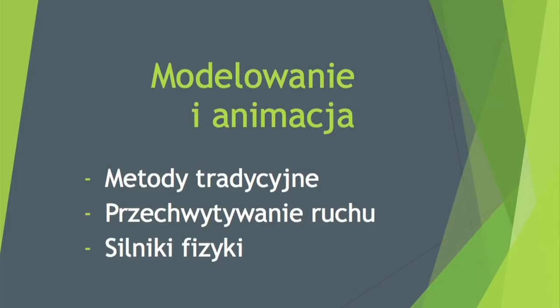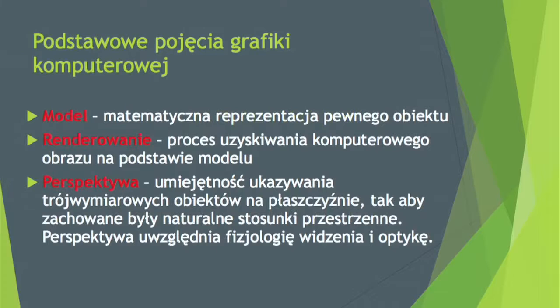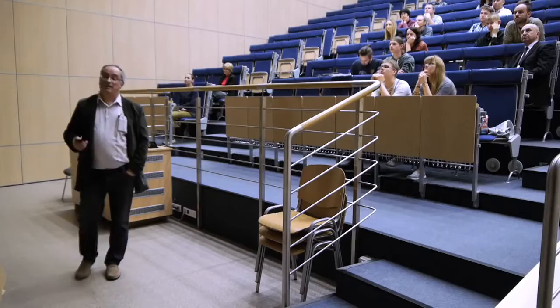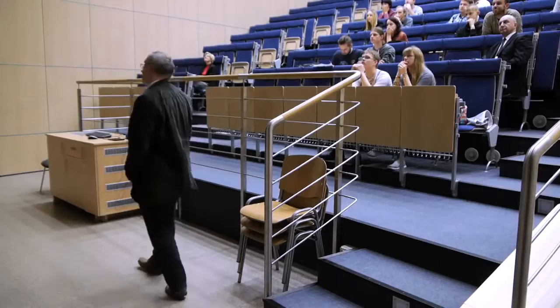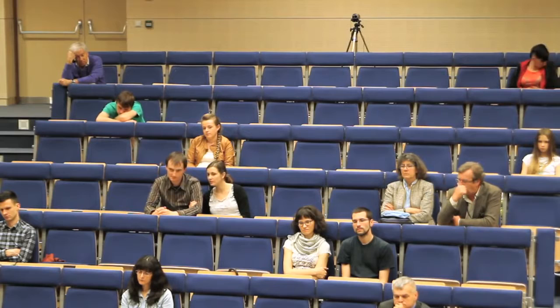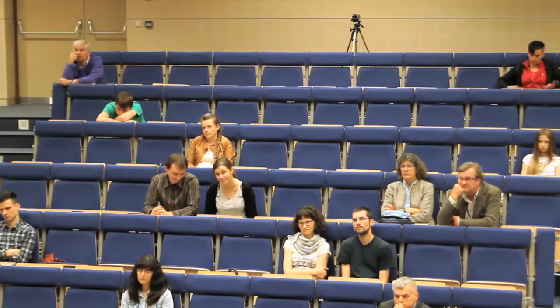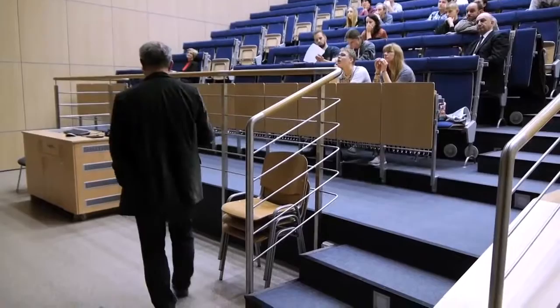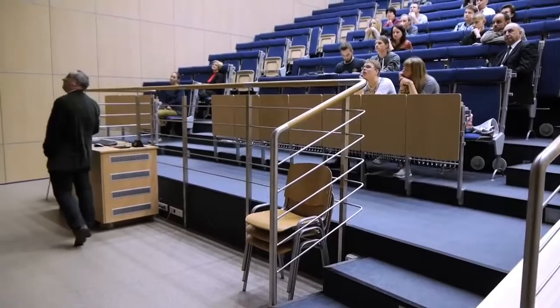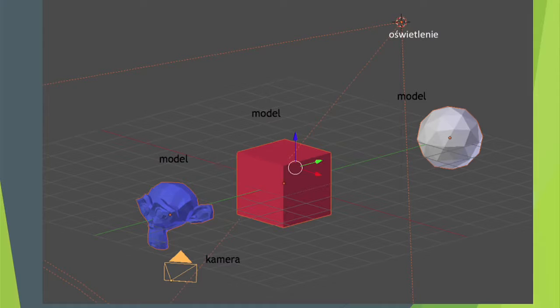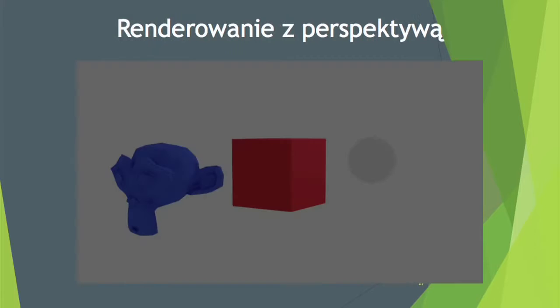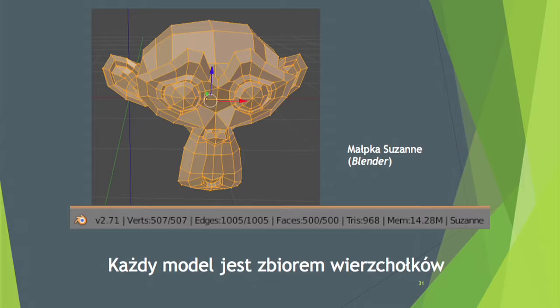Trochę o grafice komputerowej – jak tworzyć modele postaci, które będą się poruszać. Są różne techniki tworzenia tych postaci: możemy je modelować, używać technologii przechwytywania ruchu (motion capture), możemy też stosować silniki fizyki. Rzecz sprowadza się do tego, że z trójwymiarowego obrazu musimy uzyskać obraz dwuwymiarowy, który jest iluzją obrazu trójwymiarowego. W przypadku modelowania startujemy z modeli matematycznych – to jest model Małpki z Blendera, jednego z popularnych programów do modelowania.